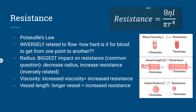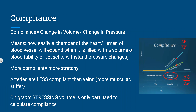Regarding resistance, the biggest takeaway is that radius has the biggest effect on resistance. Looking at the Poiseuille equation, radius is raised to the power of four, so any changes to the radius will significantly affect resistance. Resistance is inversely related to flow — it's how hard it is for blood to get from one place to another. If asked whether changing length or radius affects flow the most, it's always radius.